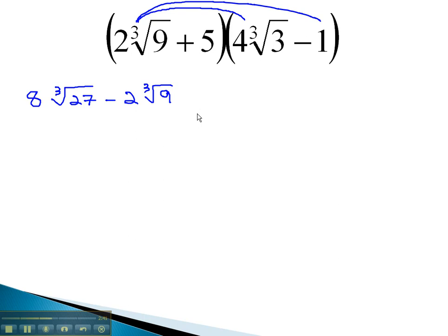Remember, negative 1 is outside the radical, so it does not get multiplied by the 9, but only the 2. 5 times 4, cube root of 3, multiplying the coefficients. 5 times 4 is 20, cube root of 3. And finally, 5 times negative 1 is negative 5.